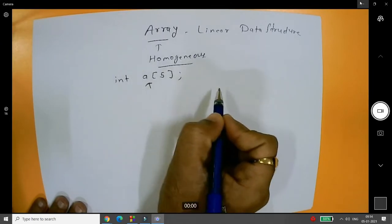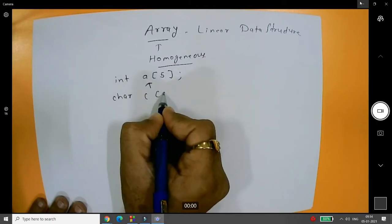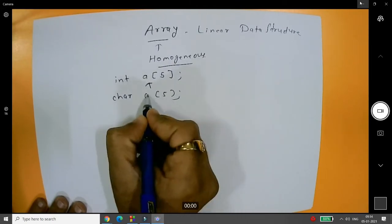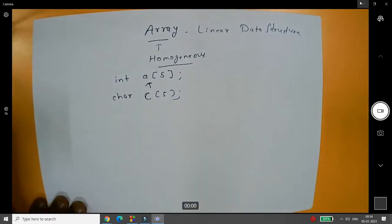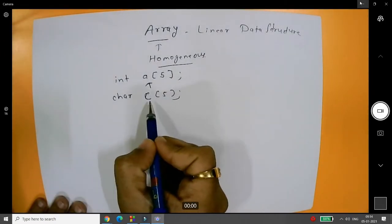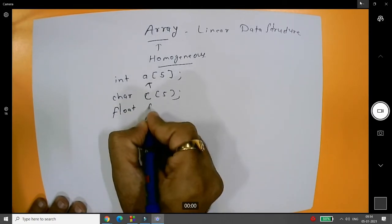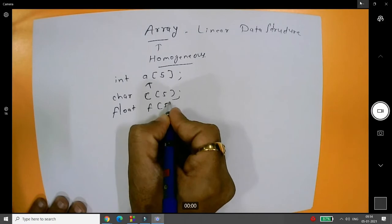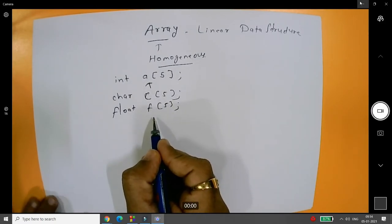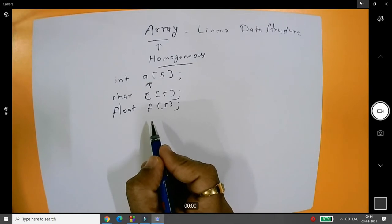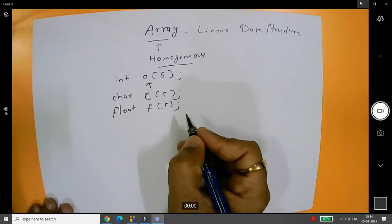For example, if you want to create an array of character — char c of five — then it will store five characters but will not store any other data type. Similarly, if you say float f of five, it will store five floating-point values only. Multiple values are stored, but all of the same type.